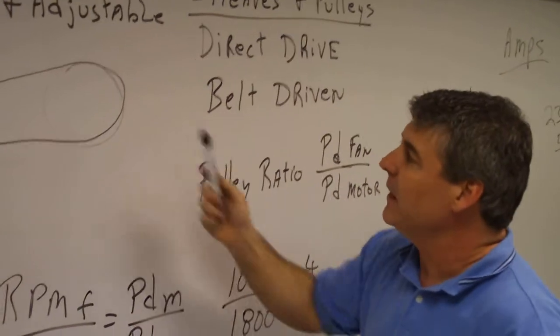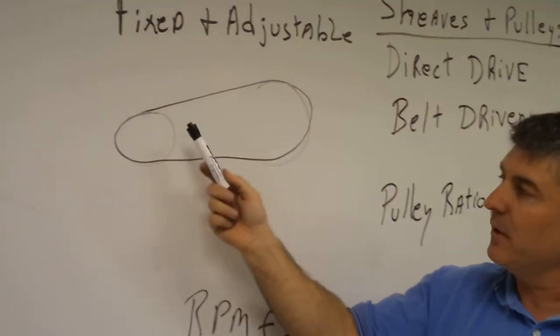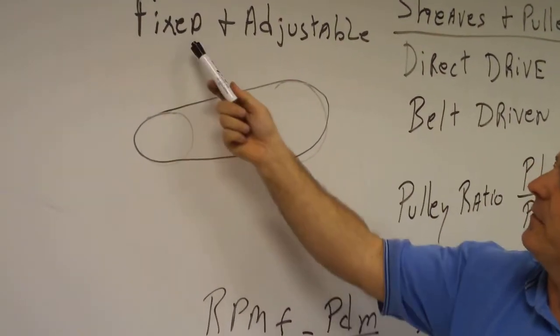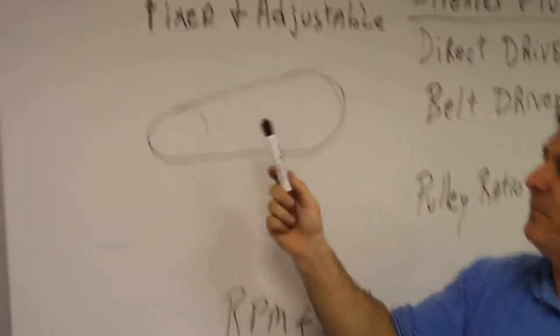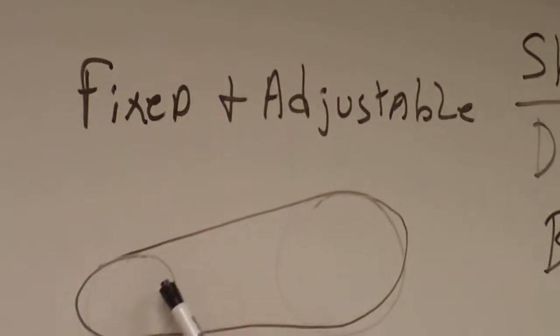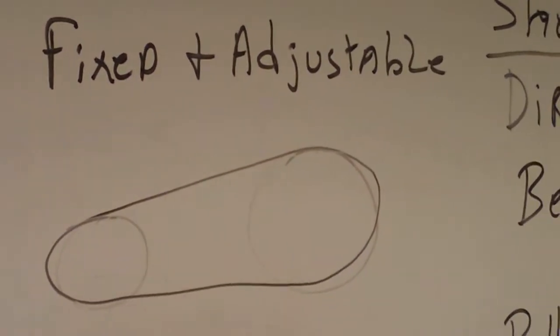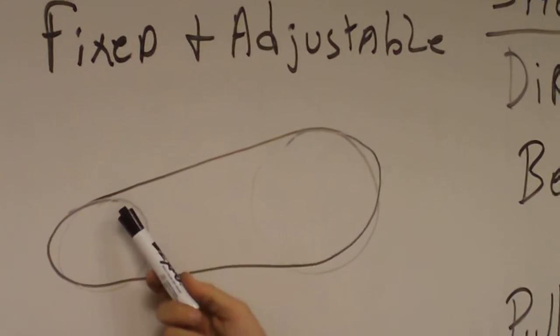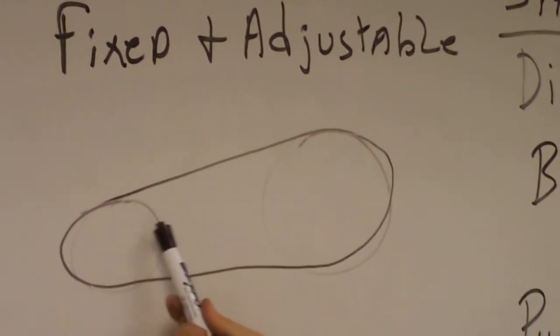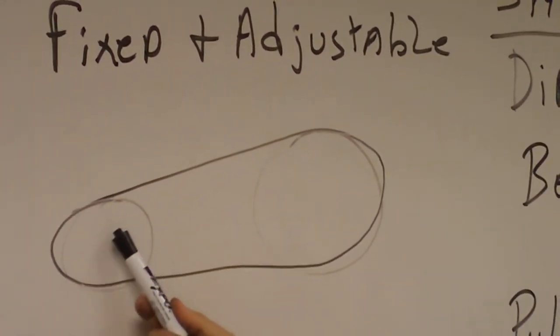Now you also have two types of sheaves: fixed and adjustable. A fixed pulley, you have no adjustment on it. It has one diameter and that's all you have. There is no way to increase or decrease the outside diameter of the pulley.